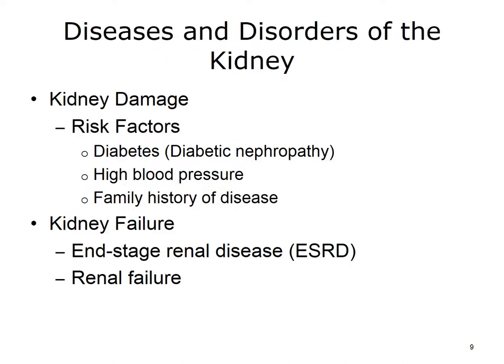Kidney diseases are also referred to as renal diseases. Inside each kidney, there are tiny structures called nephrons, which filter blood and remove waste products and extra water. Damage to the nephrons results in kidney disease and may leave the kidneys unable to remove wastes. Usually, the damage occurs slowly over years, and there are no obvious symptoms.